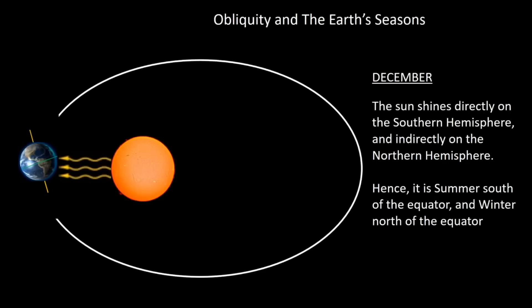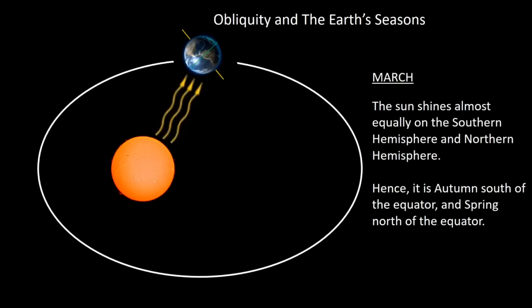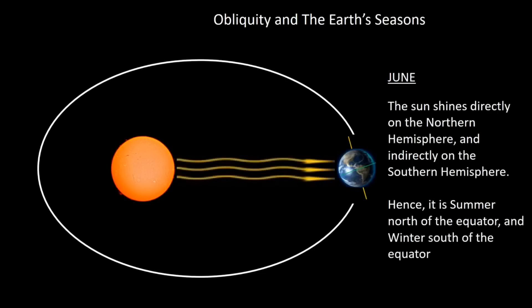In December, the Earth is almost at the perihelion. Due to the axial tilt, the Northern Hemisphere is tilted away from the Sun and the Southern Hemisphere is tilted towards it. Thus the Sun shines directly on the Southern Hemisphere but indirectly on the Northern Hemisphere — hence in December it is summer south of the equator and winter north of the equator. Moving to March, the Sun's rays are more evenly distributed, so it is autumn south of the equator and spring north of the equator. In June, the Earth is almost at the aphelion. Because of the tilt, the Sun shines directly on the Northern Hemisphere and indirectly on the Southern Hemisphere, providing summer north of the equator and winter south of the equator.